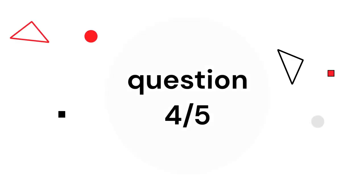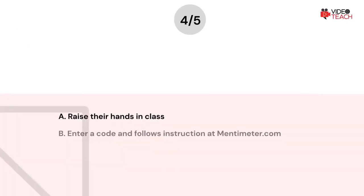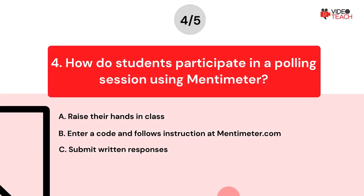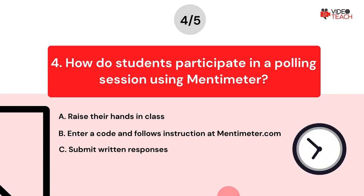Question number four. How do students participate in a polling session using Mentimeter? Option A: raise their hands in class. Option B: enter a code and follow instructions at Mentimeter.com. Option C: submit written responses. Now you have about 15 seconds to think about your answer.